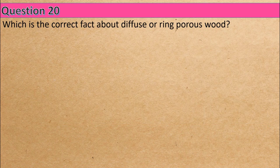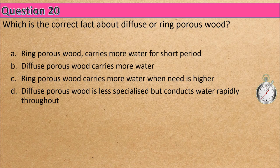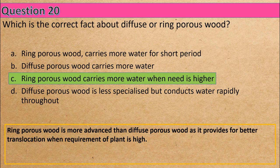Question 20: Which is the correct fact about diffuse or ring porous wood? Option A: ring porous wood carries more water for a short period, Option B: diffuse porous wood carries more water, Option C: ring porous wood carries more water when need is high, Option D: diffuse porous wood is less specialized but conducts water rapidly throughout. The correct answer is Option C: ring porous wood carries more water when need is higher.